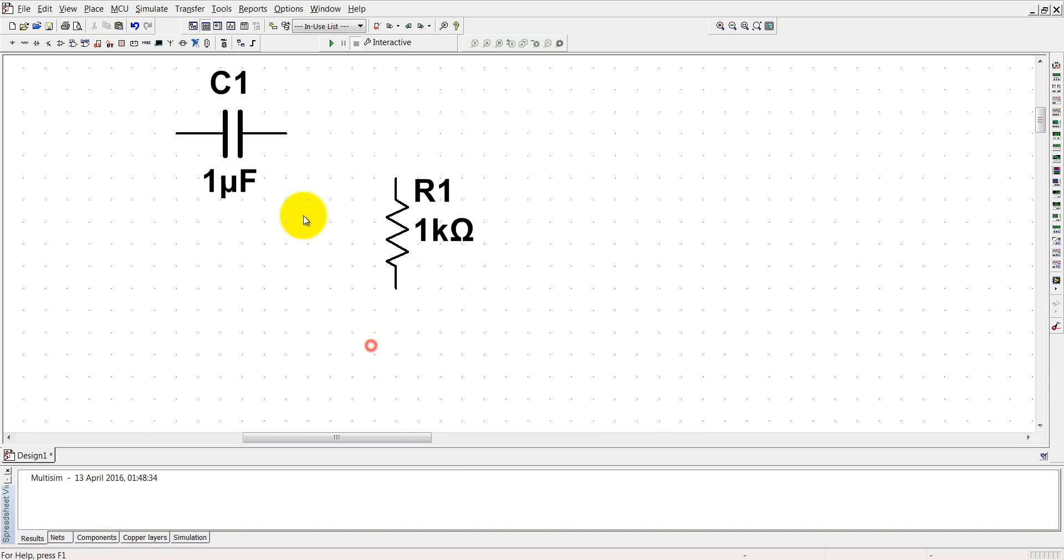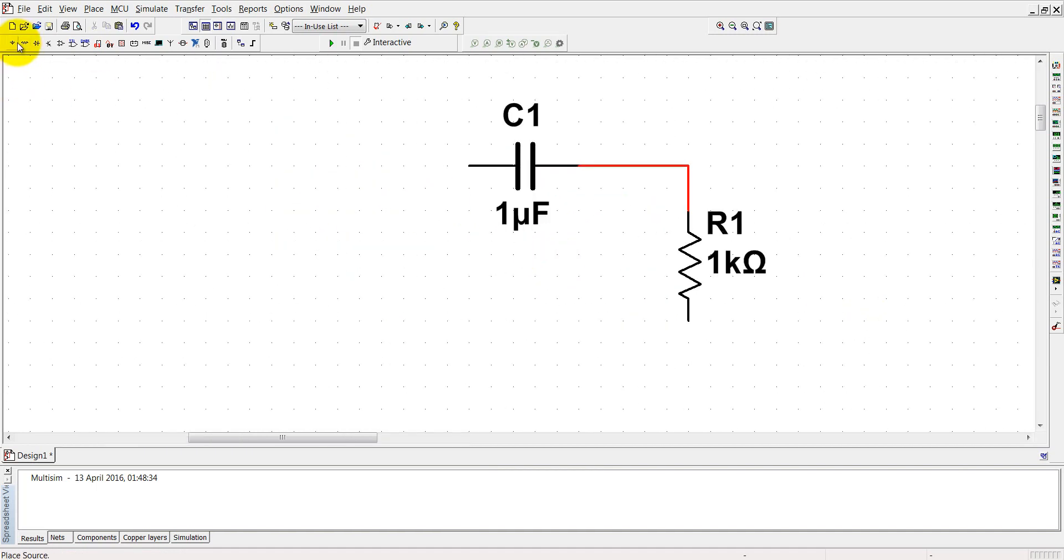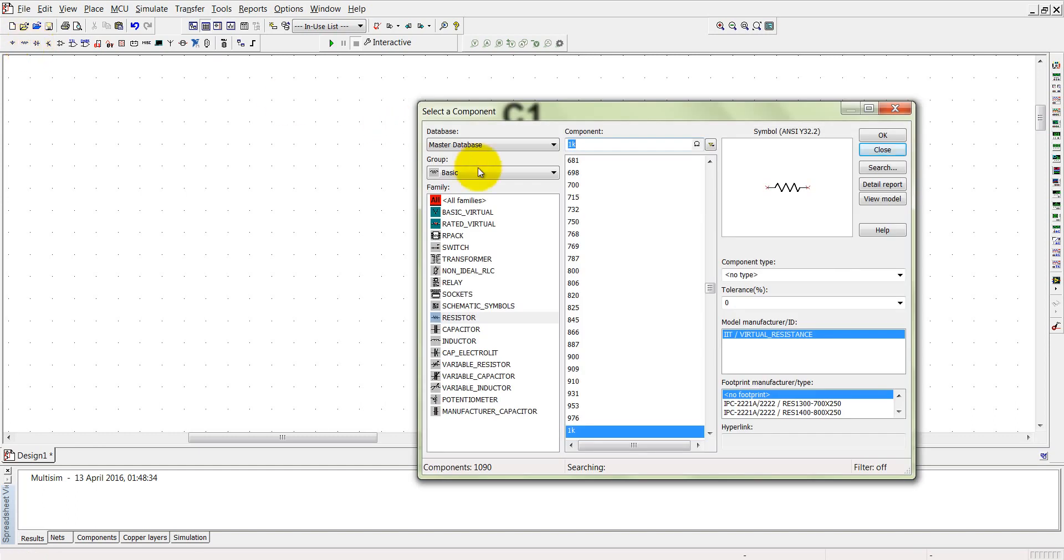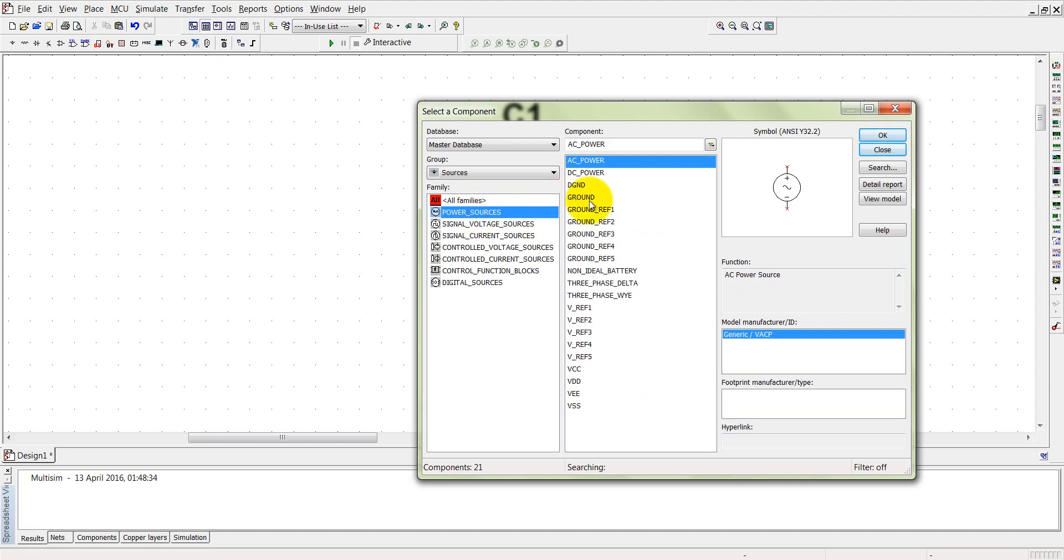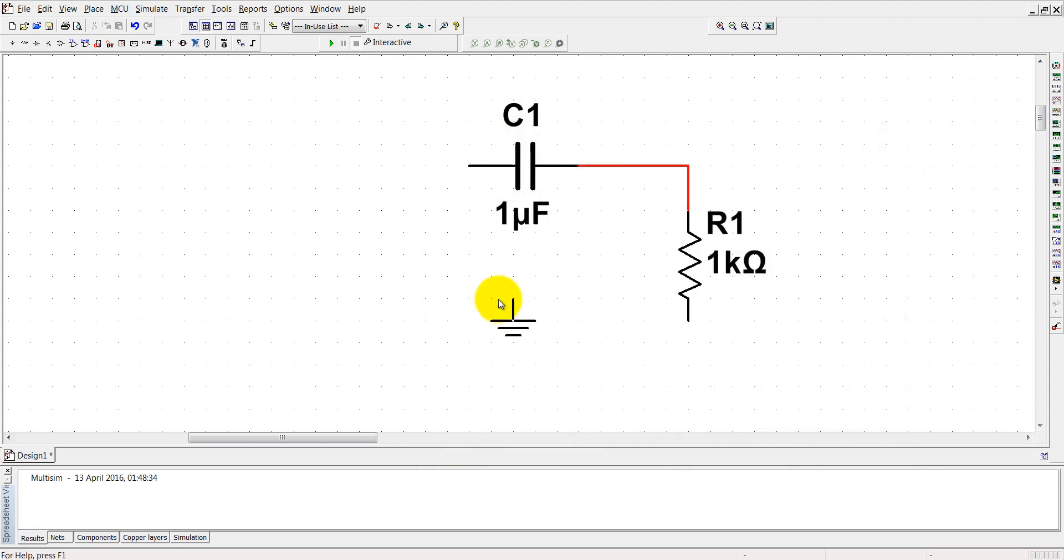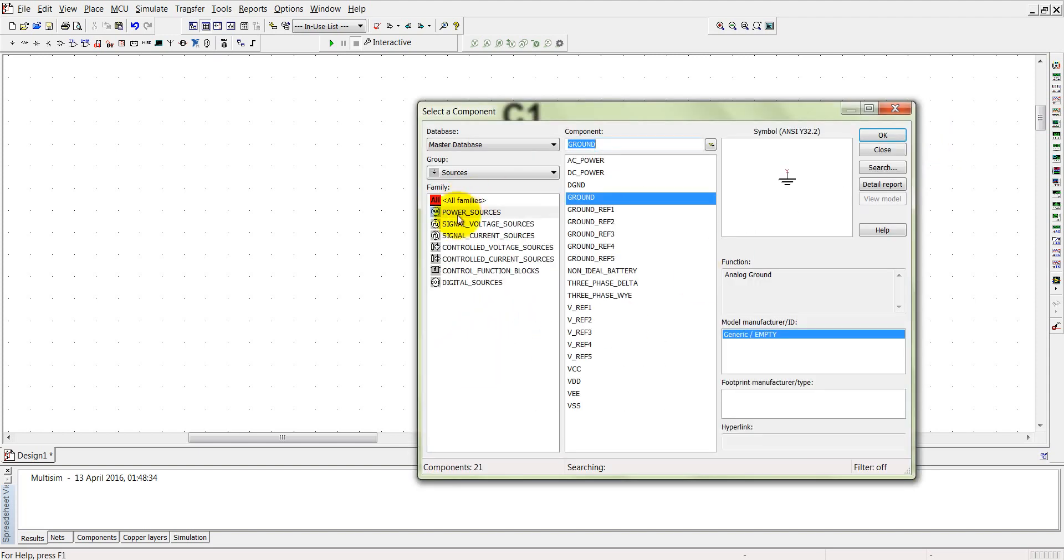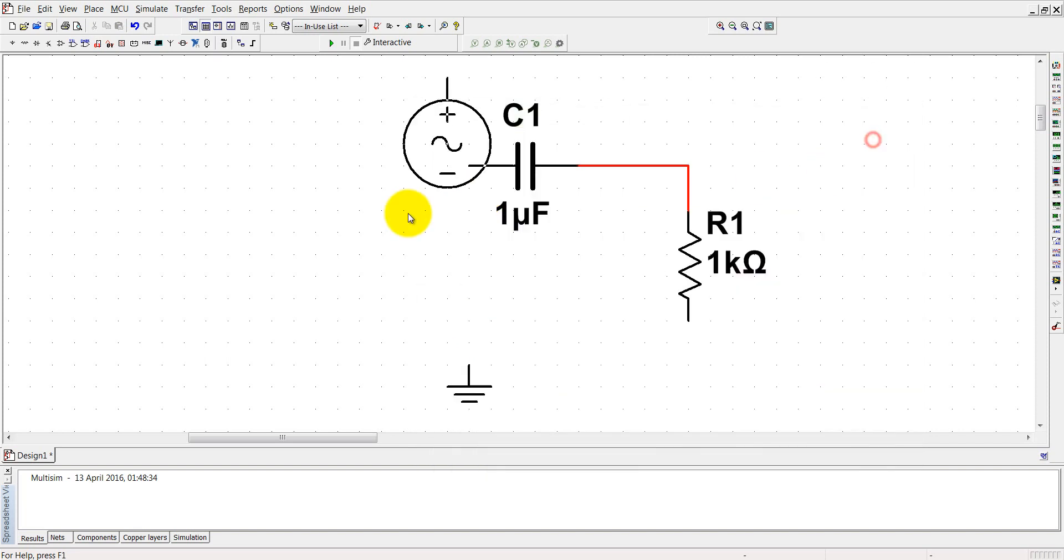And rotate it by 90 degrees. Connect it together. And just take the input source. Here the source must be the power supply ground, here.